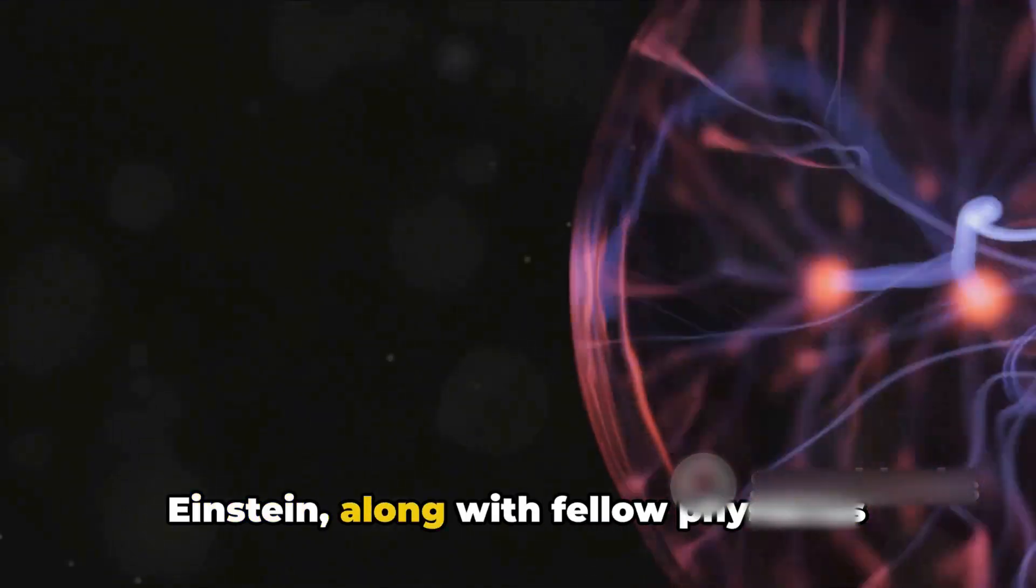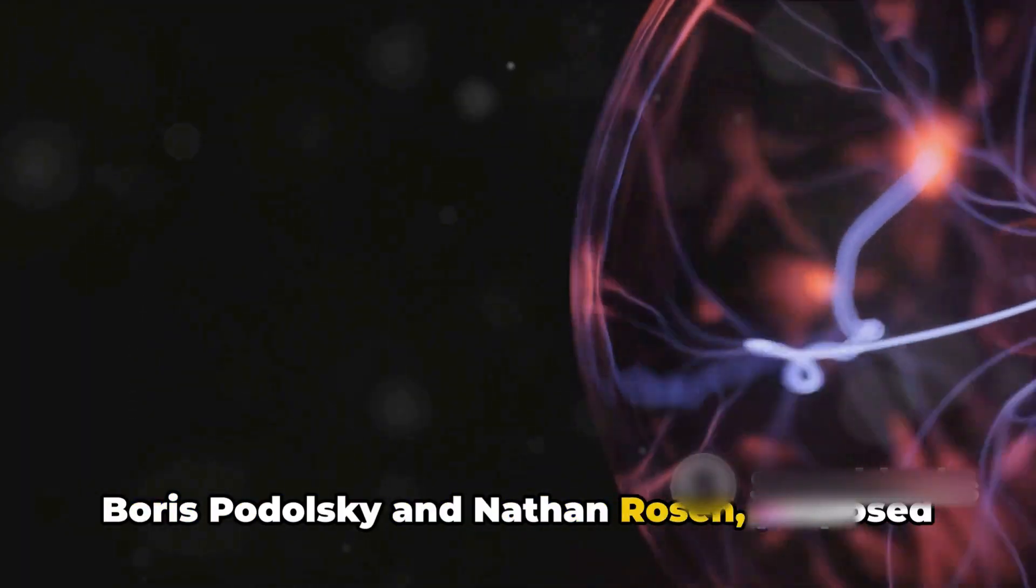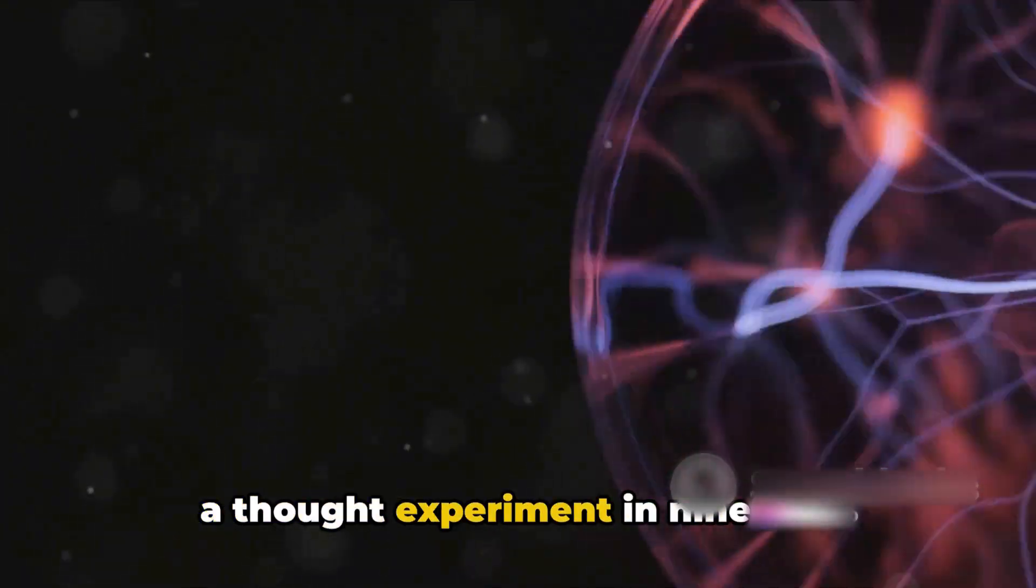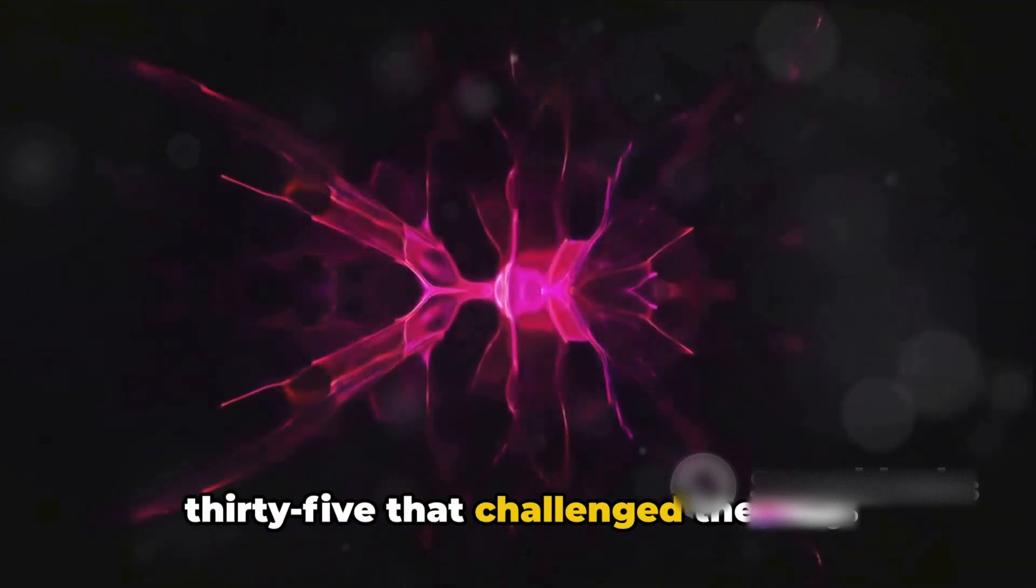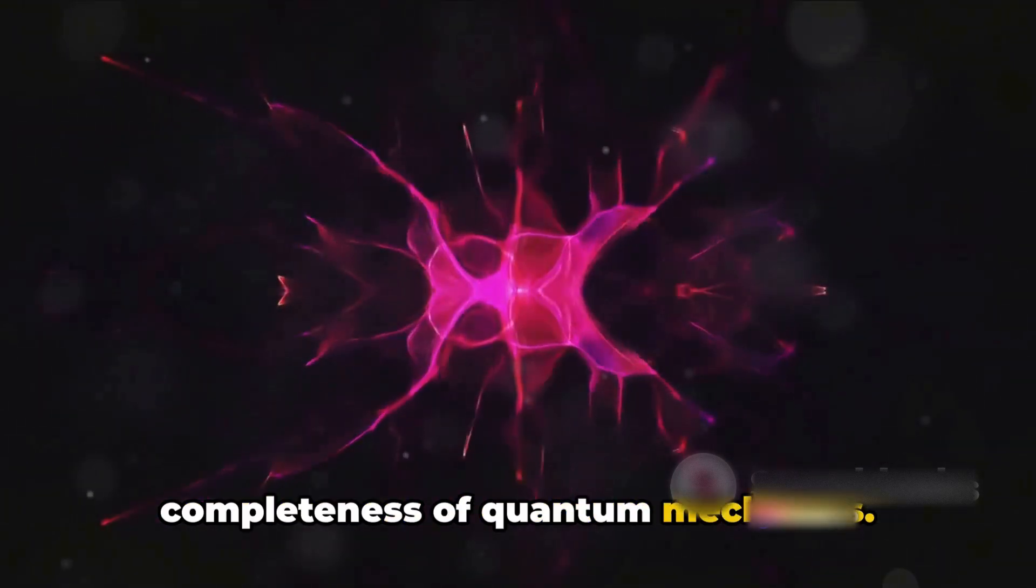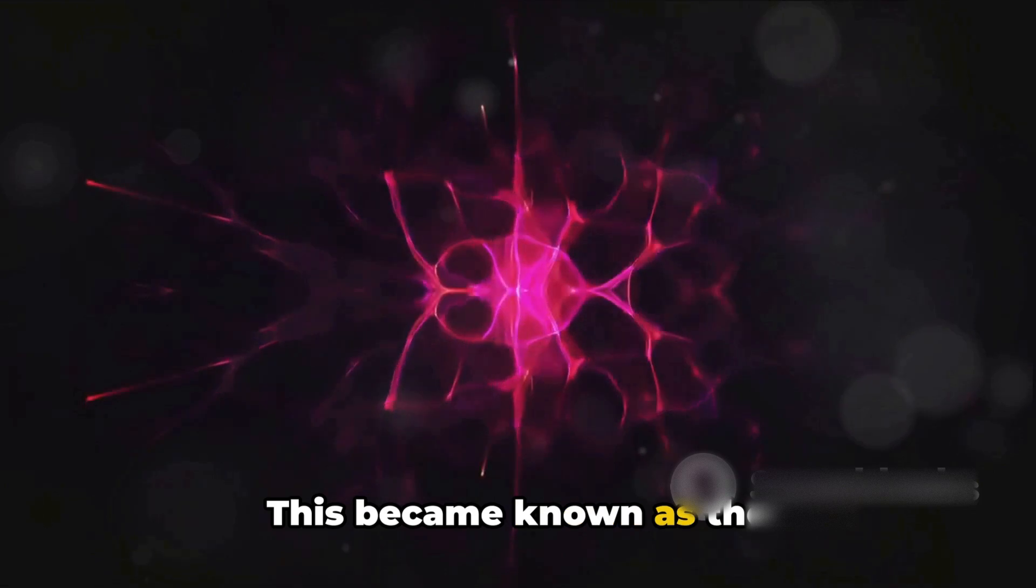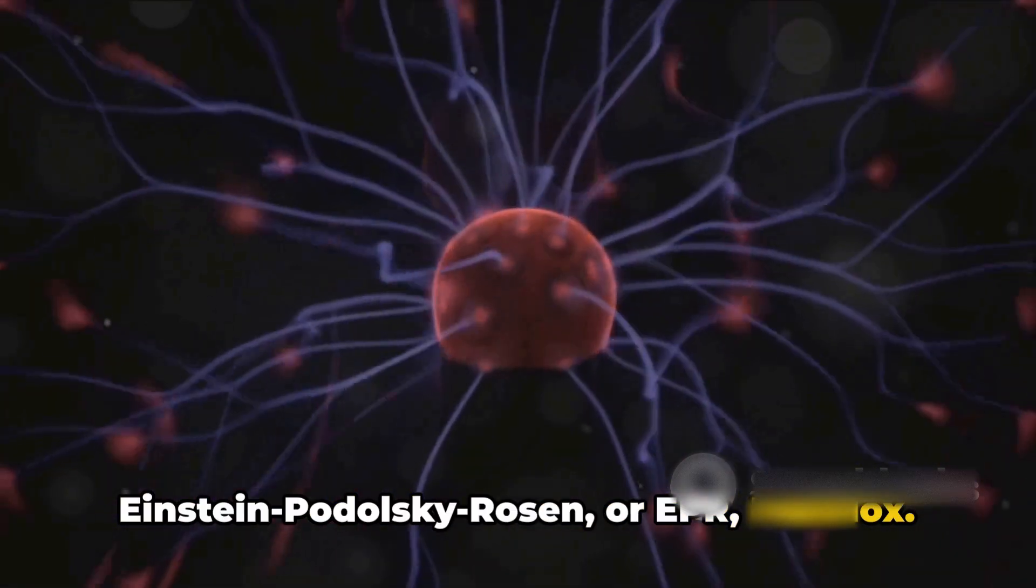You see, Einstein, along with fellow physicists Boris Podolsky and Nathan Rosen, proposed a thought experiment in 1935 that challenged the very completeness of quantum mechanics. This became known as the Einstein-Podolsky-Rosen or EPR paradox.